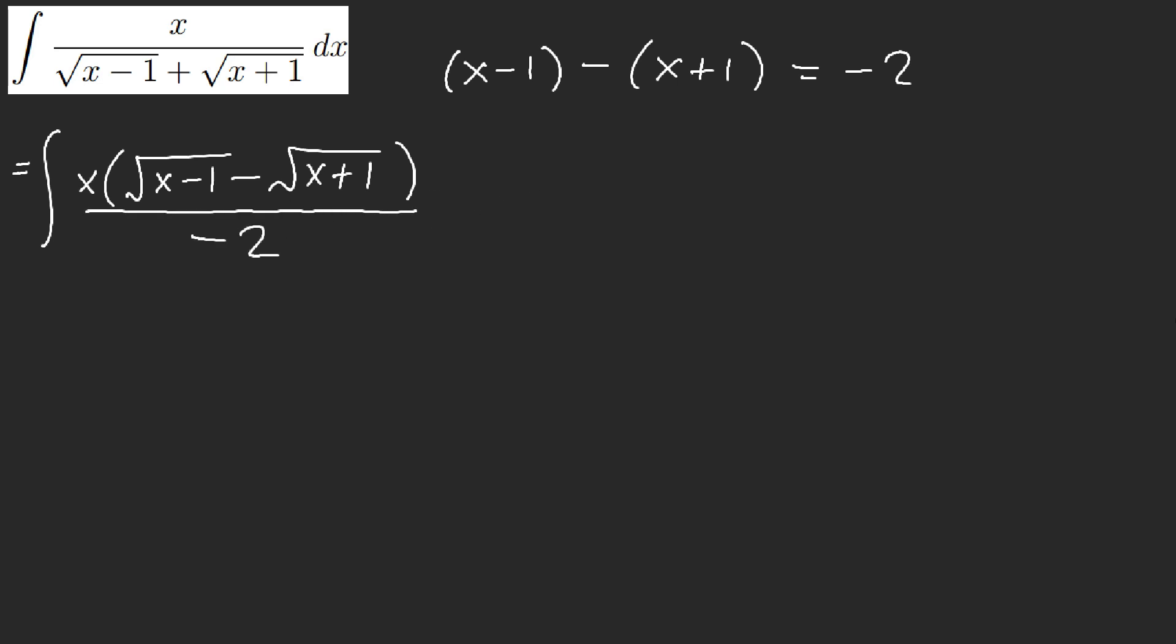Now, obviously, we can get rid of this negative 2 just by flipping this. Right? But other than that, what do we do here? What do we do here?